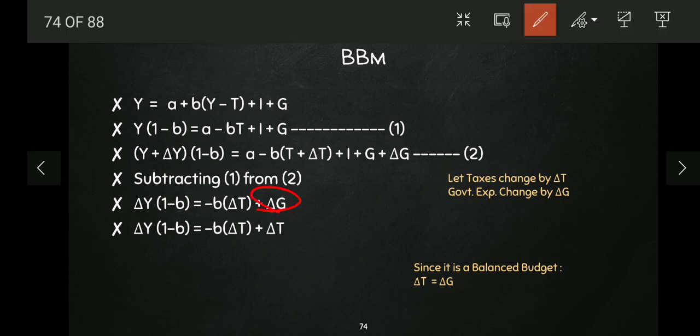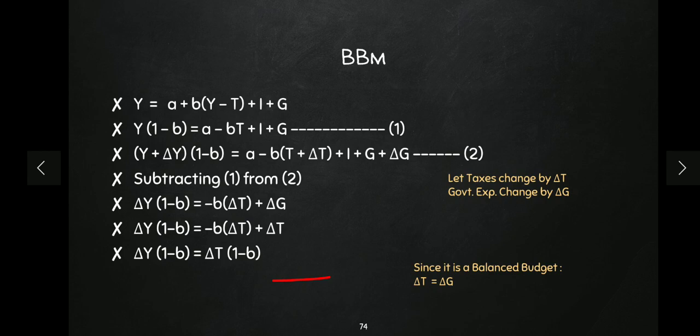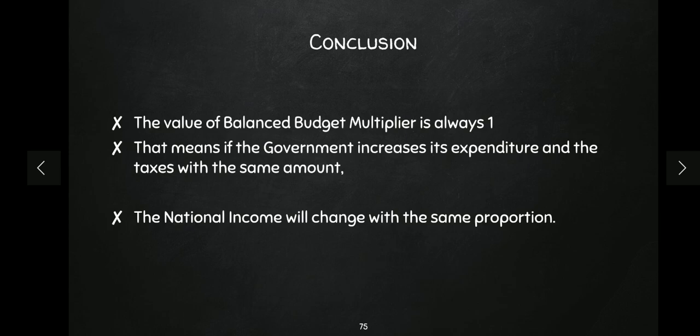When we solve further, we get: delta Y multiplied by (1 - b) is equal to delta T multiplied by (1 - b). When we divide, the value comes out to be one. This means the balanced budget multiplier's value is always one. This means if the government changes its expenditure at the same rate as taxes, then national income will also change by the same amount. For example, if taxes increased by 100 rupees and government expenditure also increased by 100 rupees, then national income will also change by 100 rupees.